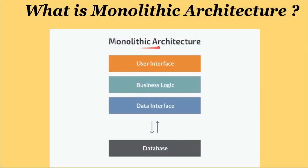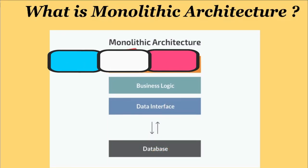First of all, what is the monolithic architecture? It has a single code base. For example, a single product has user interface, business logic, and data interface. So in a single system, multiple modules will be packed and will be running. Most probably it will have a single database.